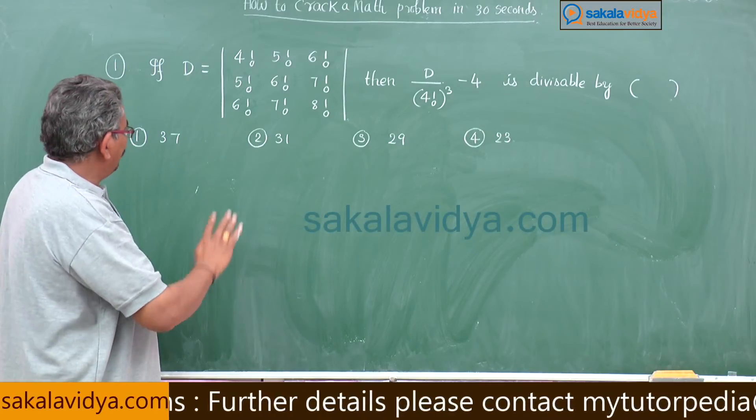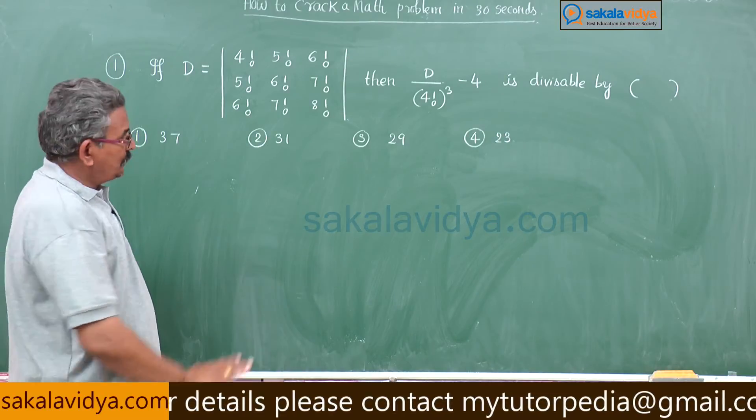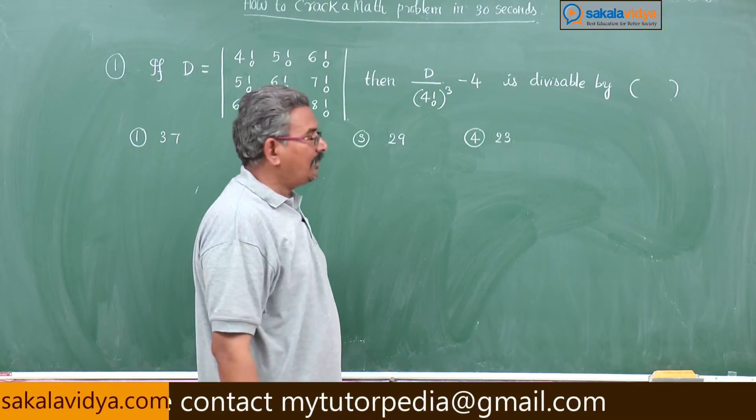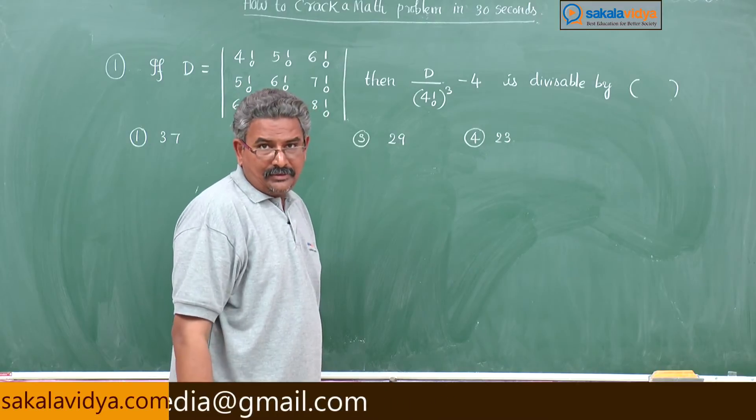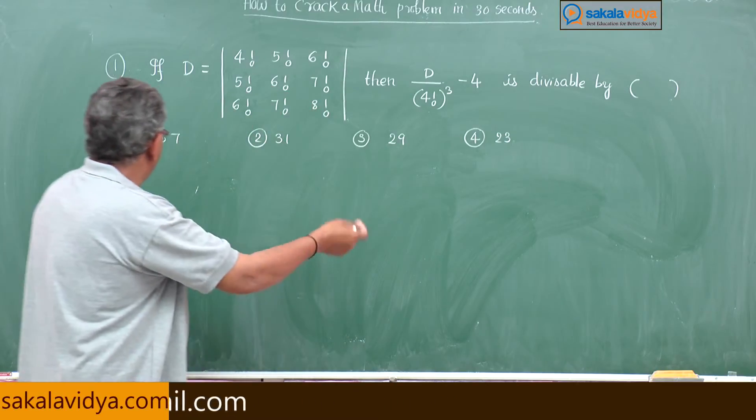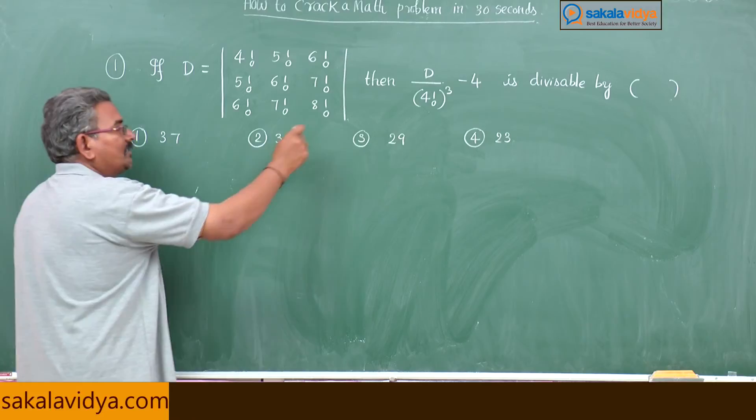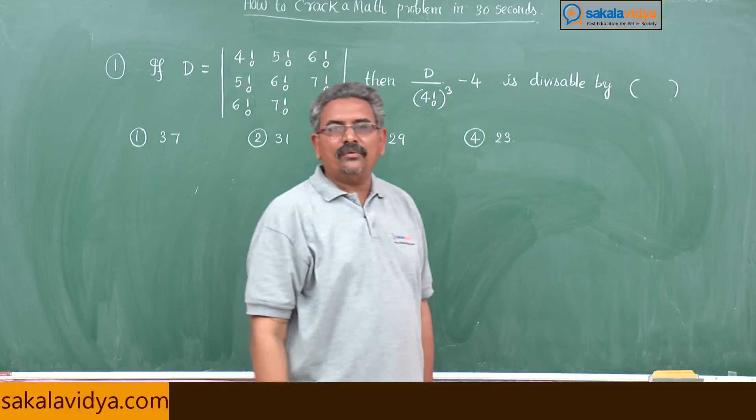But what we have to find out is D by 4 factorial cubed minus 4 is divisible by. We are not asked to find out the determinant value here. We are asked to find out whether it is divisible by 37, 31, 29, or 23.